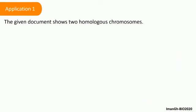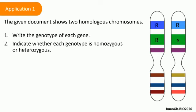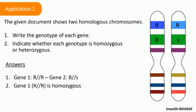Solve application 1 where you have to write the genotype of each gene represented in the given document and determine whether it is homozygous or heterozygous. Keep in mind if the two alleles forming the genotype are the same, then it is pure or homozygous. However, if the two alleles are different, then it is hybrid or heterozygous.